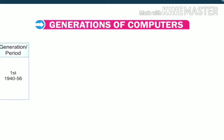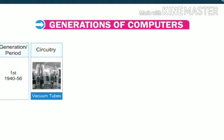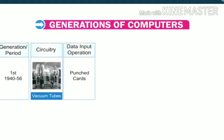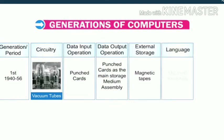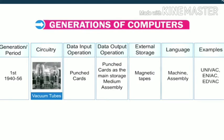First generation computers, from 1940 to 1956, had circuitry of vacuum tubes. Data input and output operations were through punched cards, which also served as the main storage medium. External storage was on magnetic tapes. Languages used were machine language and assembly language. Examples include UNIVAC, ENIAC and EDVAC.